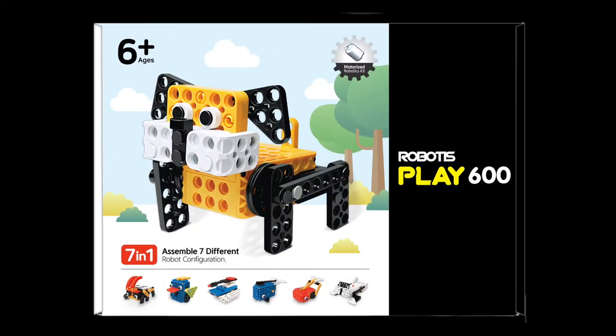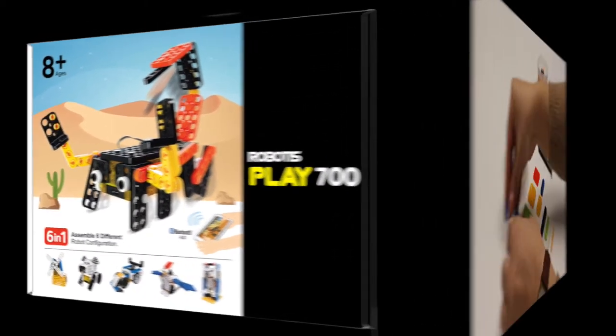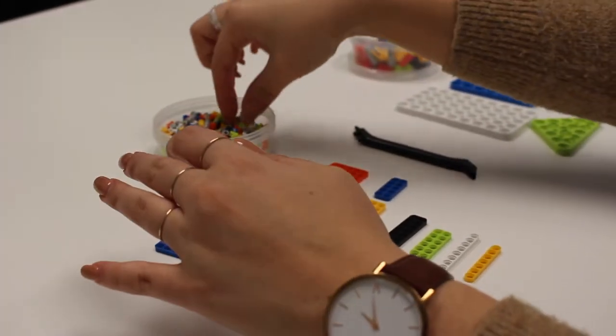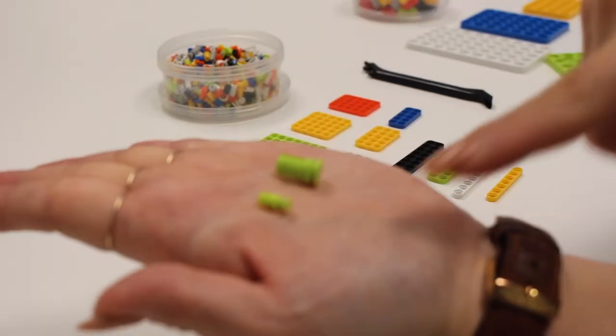The 12mm plates and rivets are included in the Robotis Play 600 Pets and Play 700 Olobot. I'll be demonstrating how to put the two plates together using the rivet.